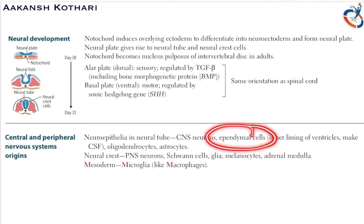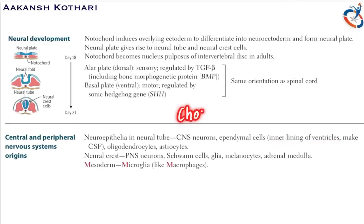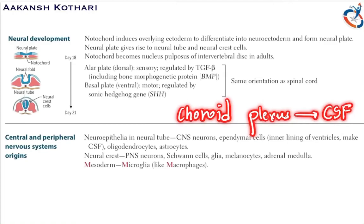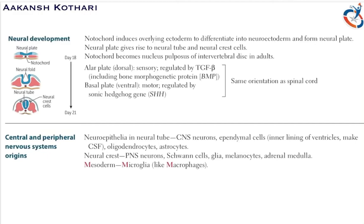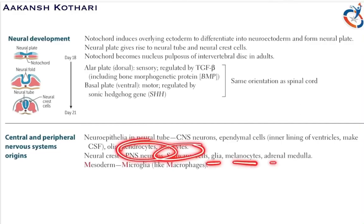The ependymal cells form the inner lining of the ventricles and form cells called choroid plexus, which further produces cerebrospinal fluid. So CNS neurons, ependymal cells, oligodendrocytes, and astrocytes are produced by neuroepithelial cells in the neural tube. The neural crest cells form the PNS neurons, Schwann cells, glial cells, melanocytes, and adrenal medulla. The mesoderm forms the microglia, or the macrophages of the nervous system.